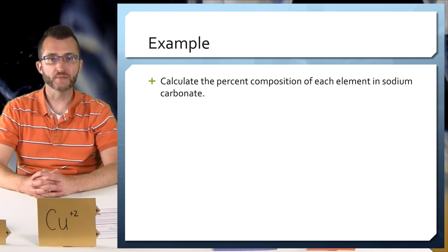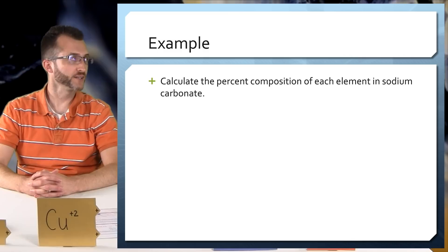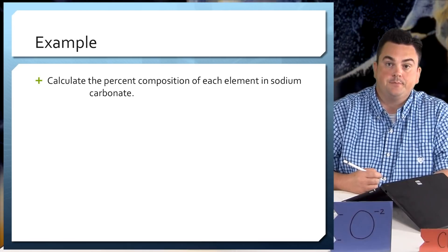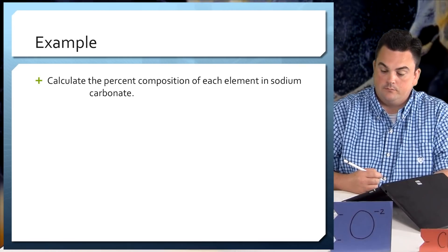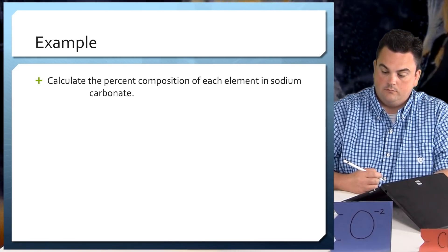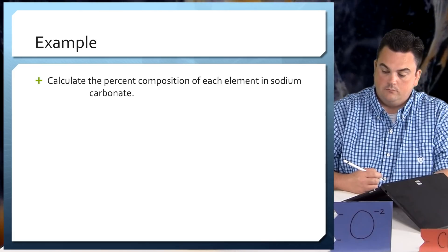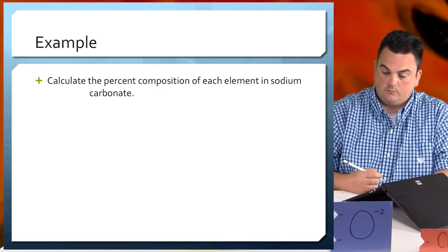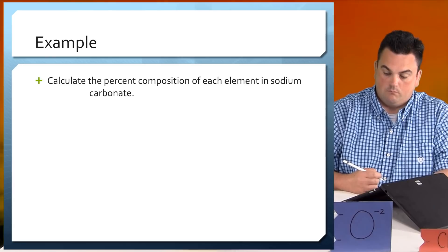Let's do an example. Fu, are you ready? I am. We're going to calculate the percent composition of each element in sodium carbonate. Our first step is to find the chemical formula for sodium carbonate.